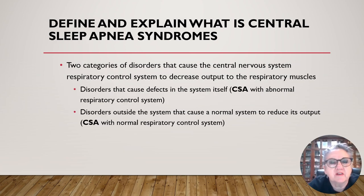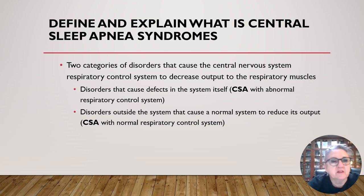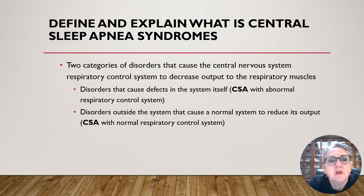There are two categories of disorders that cause the central nervous system respiratory control system to decrease output to the respiratory muscles. They are: disorders that cause defects in the system itself — central sleep apnea with abnormal respiratory control system — or disorders outside the system that cause a normal system to reduce its output, central sleep apnea with normal respiratory control system.